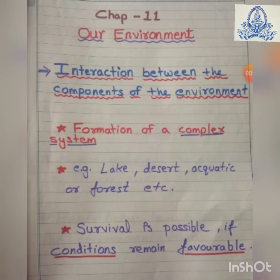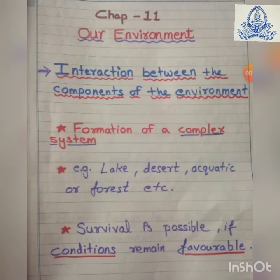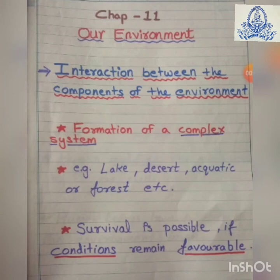Hello students, today we will take the next topic: interaction between the components of the environment. We already understood in the first part about the natural environment — the two components, that is abiotic (non-living) and biotic (living) components. Here, interaction means interrelation between the living and non-living things. All the biotic components are connected with non-living components. For example, animals use leaves, branches, trees, or soil for shelter, and other living things for food. All living beings, to survive, adopt the environment.